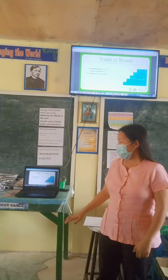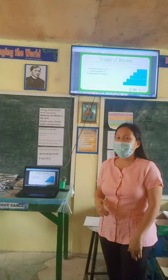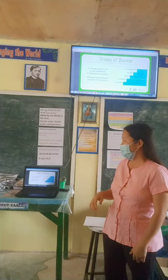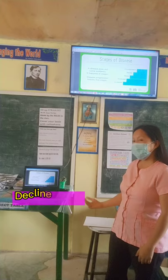Speaking of the stages of disease or infection — a disease does not come suddenly; it happens in stages. Disease progression follows five stages: the first is incubation, second is prodromal, third is illness, next is decline, and the last is convalescence.